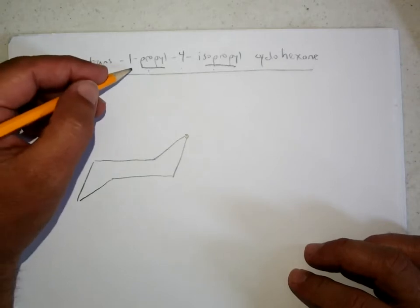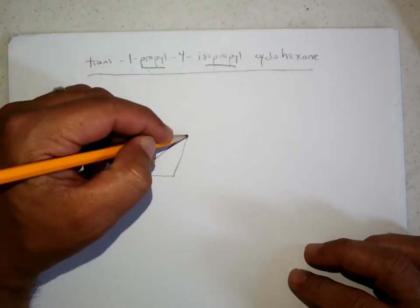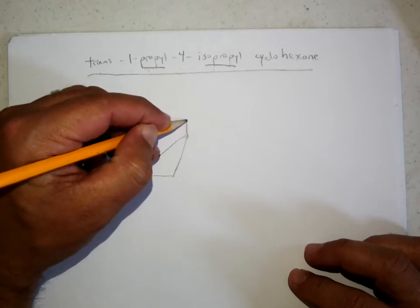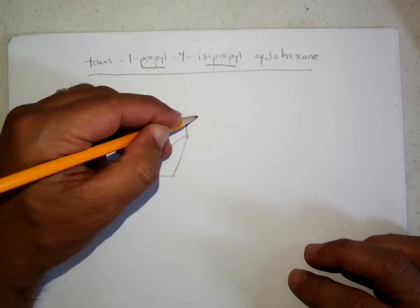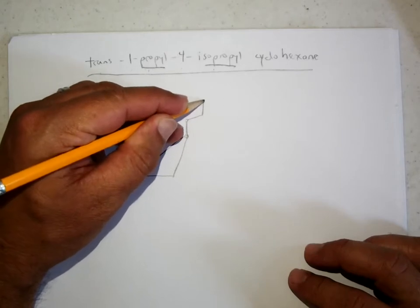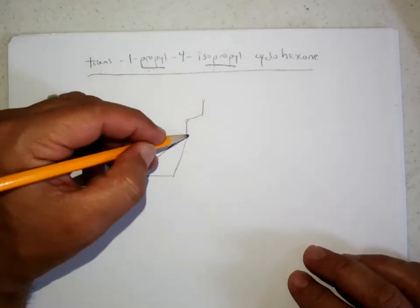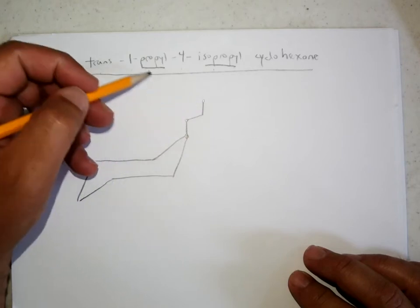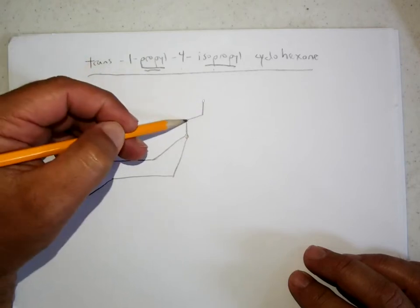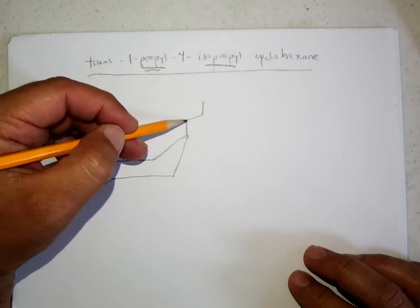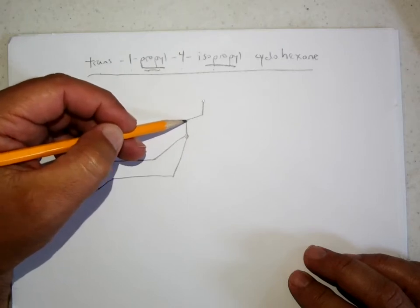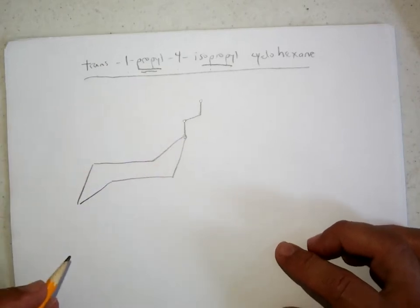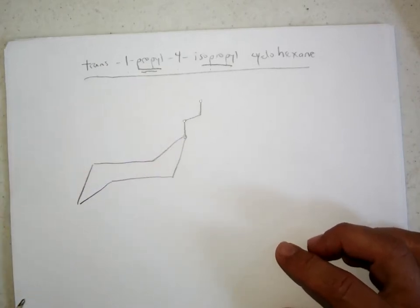But if we just start on carbon number one, we have just a regular old propyl, and if we want to start with a higher energy conformer, we could put this in the axial position on the first carbon. So here's a propyl group, one, two, three carbons, and since it's a regular old propyl, all three carbons are in a row from the point of connection.